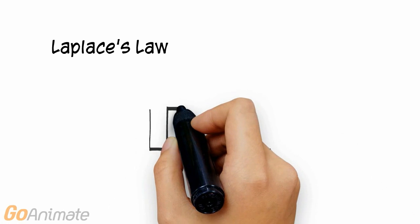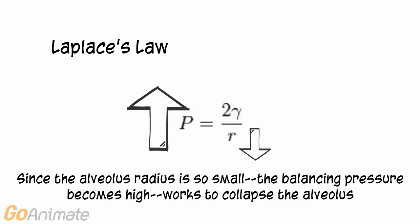The small radius of the alveolus results in a large balancing pressure. The large pressure works to collapse the alveolus.